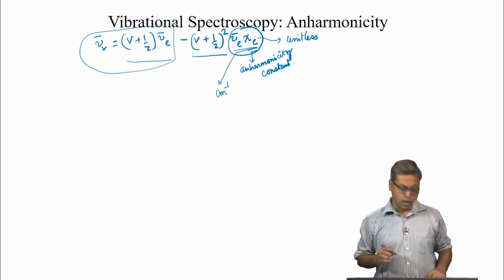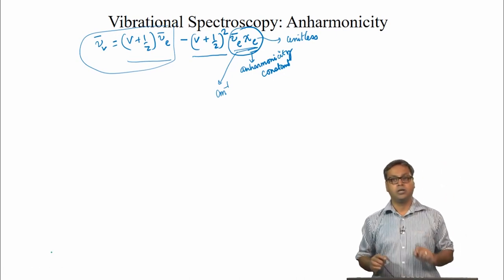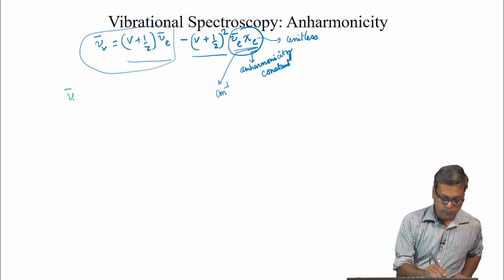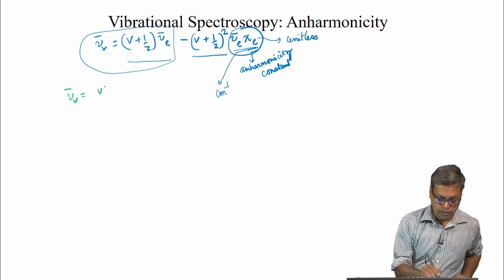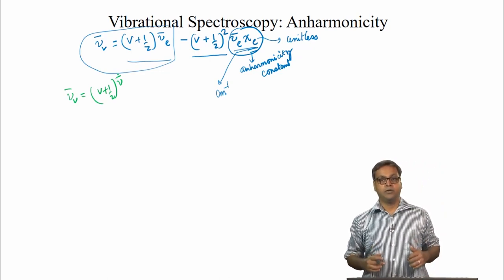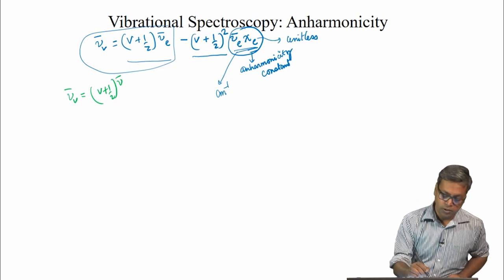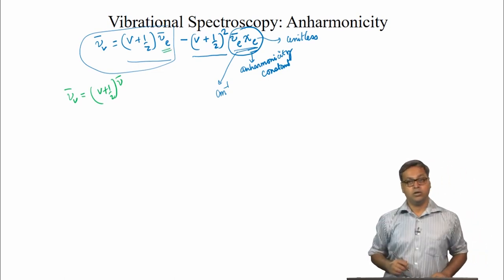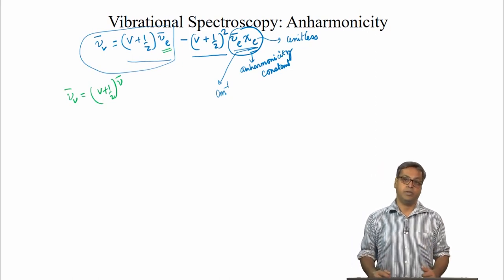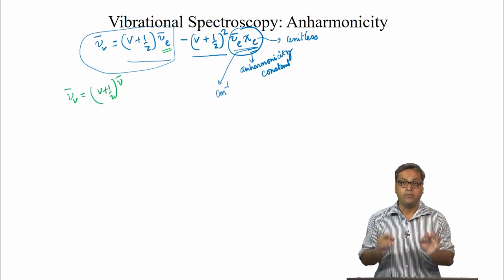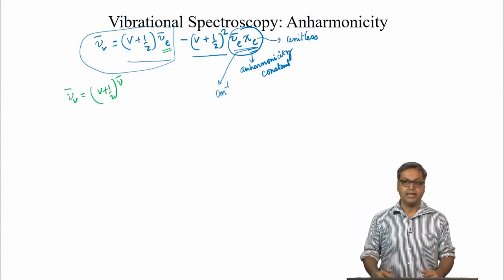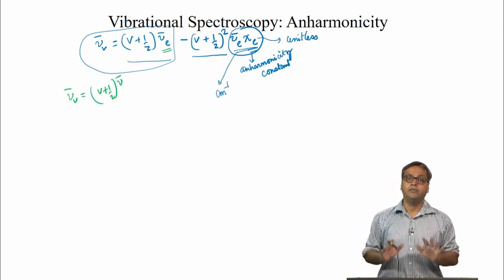In case of the harmonic oscillator, we used nu-bar and wrote nu-bar_v equals (v + 1/2) nu-bar. But for the anharmonic oscillator, we use nu-bar_e instead. Nu-bar_e is not something we can measure directly from the spectrum; it is something we derive by fitting this equation to the spectral data. So we can say this is a hypothetical frequency.